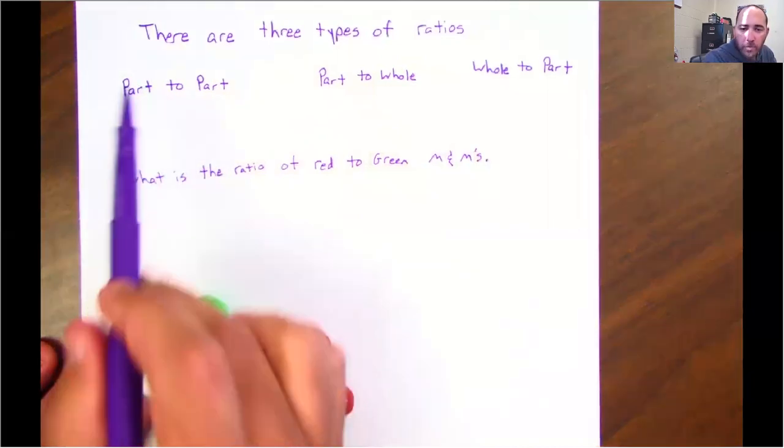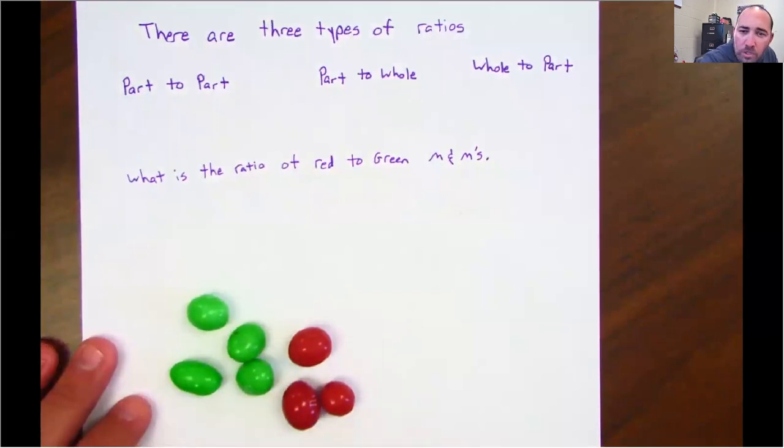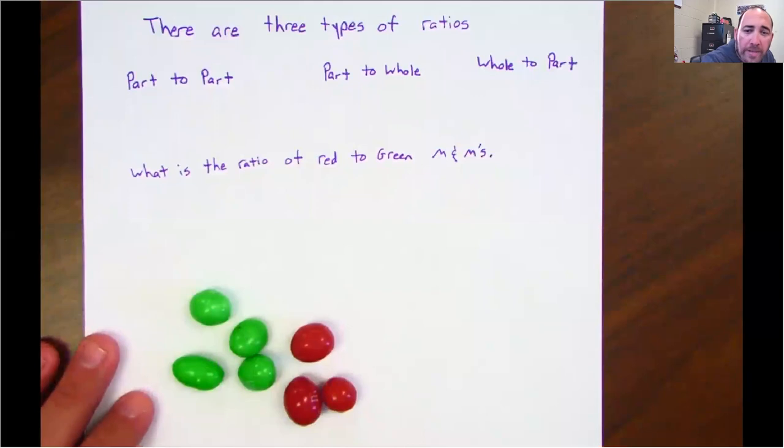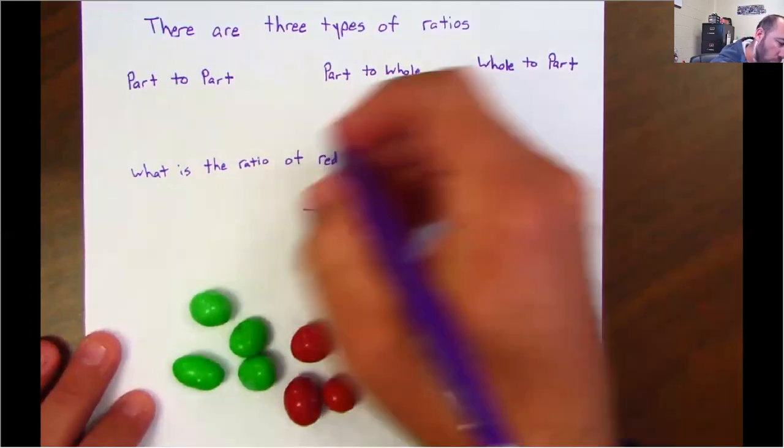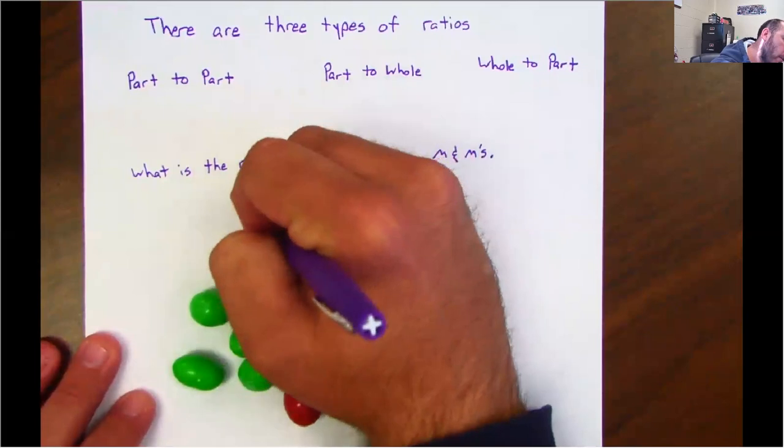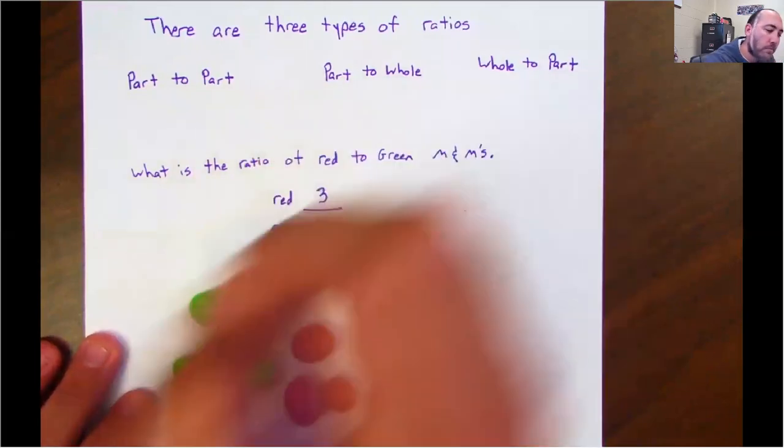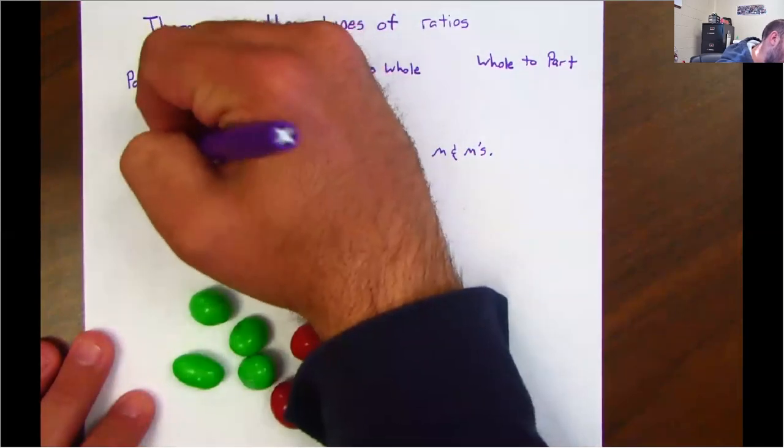Well, this is actually a part to part. Why? Because it's two different things. We got different color M&Ms here. So what is the ratio of red to green? How many red M&Ms do you see? Well, there's three. How many green? Four. So there's ratio of red to green M&Ms. So this one goes with part to part.